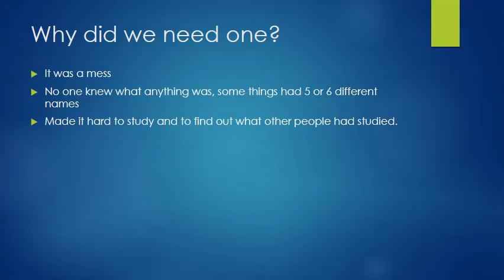And the reason that they needed a system was because everything was a mess. There were people discovering all sorts of things all over the world. Some people were discovering the exact same thing because it lived in two different places, or they would have common names for the same thing. If one person found this one plant and another person knew that plant, one person would call it one thing and they would call it something else, but they really were talking about the same thing. It made it very difficult to study and to find out what other people had studied, because sometimes you don't want to start from scratch. If you're going to write a research paper, you're going to look and see what other people have researched and then add to it.